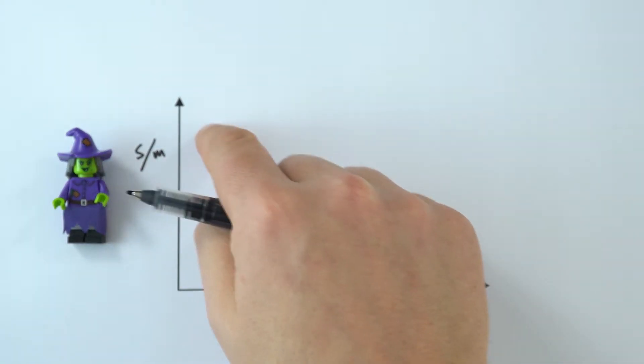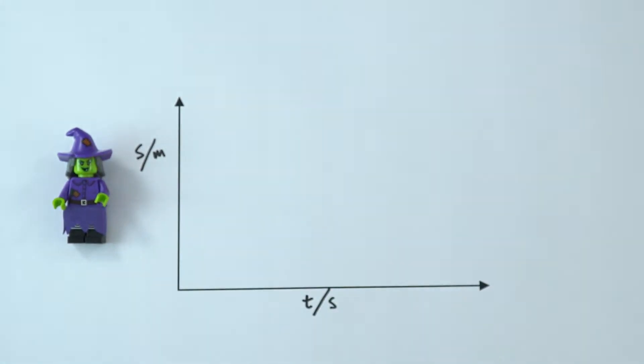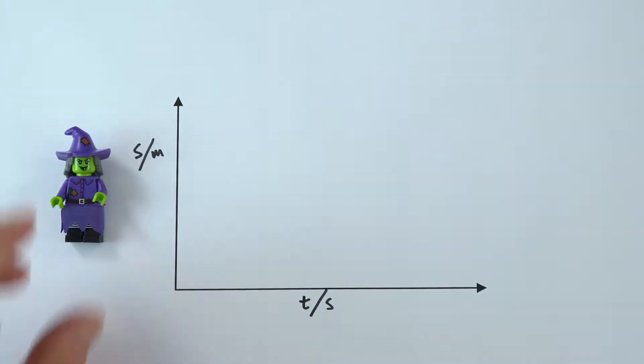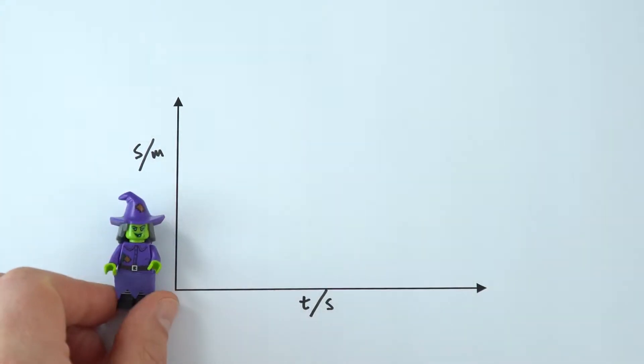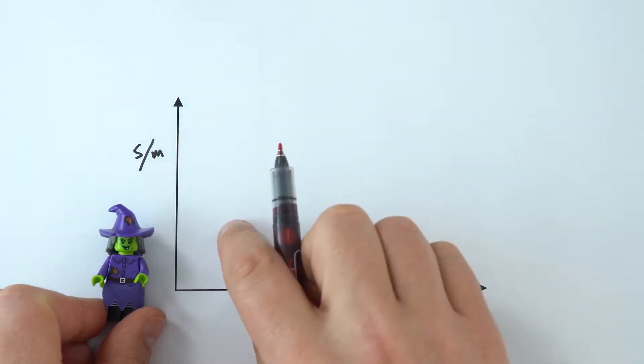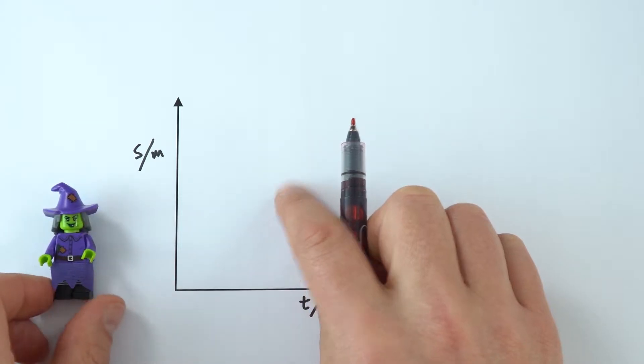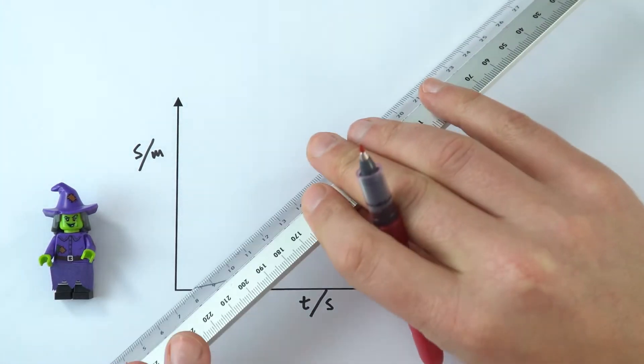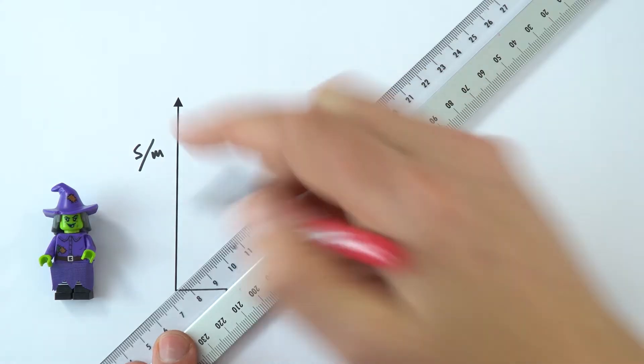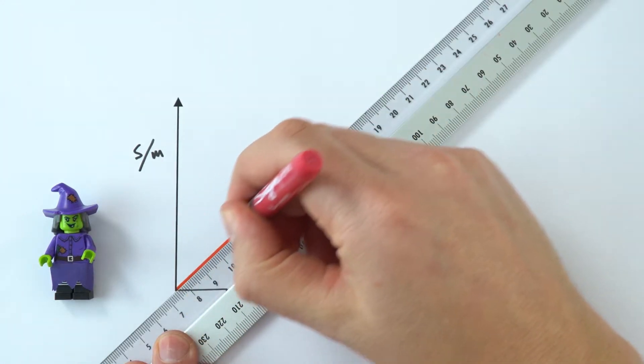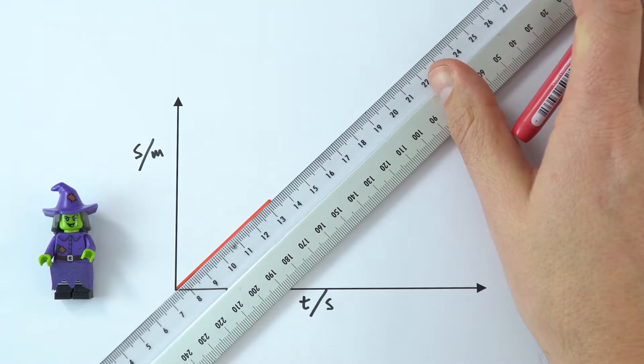So we've got a graph where we've got distance and time. Now imagine that this person just started walking at a uniform speed in the same direction. Every second they go the same distance away from where they started. And we could actually start to plot that on the graph. And what we might find then is, provided they're going at a constant velocity or a constant speed, we'd get a straight line like this.